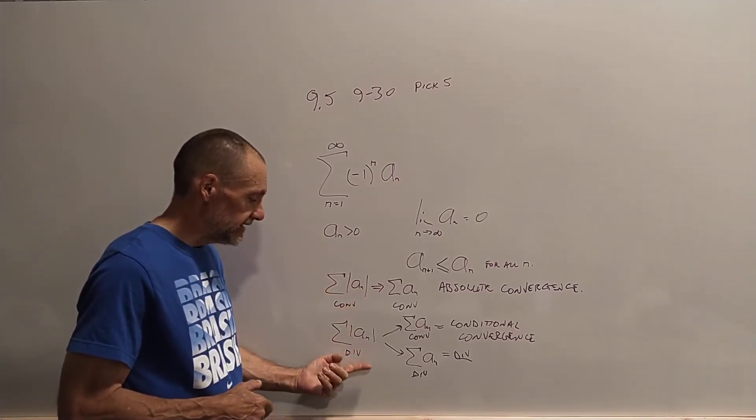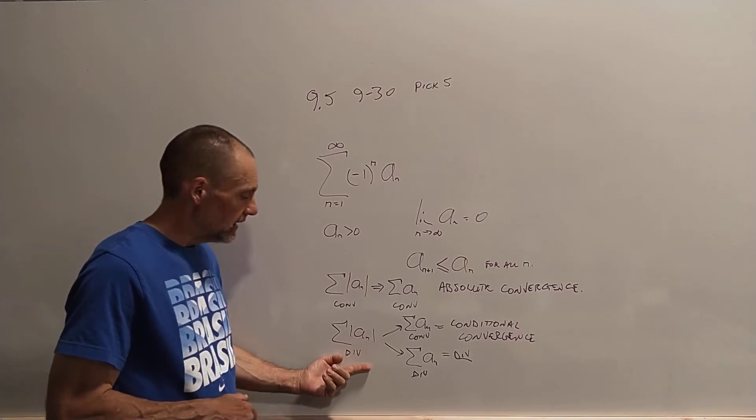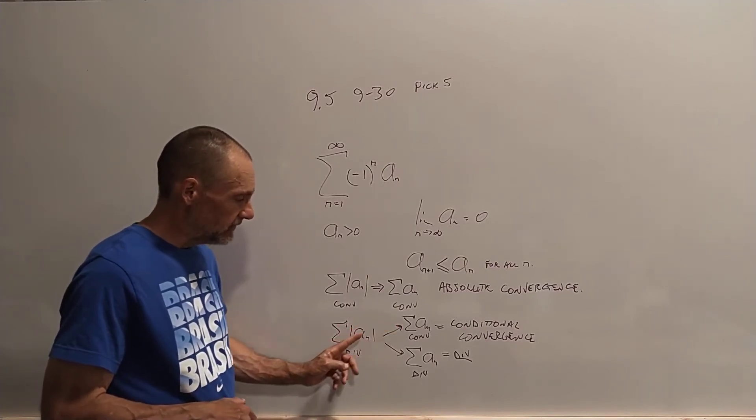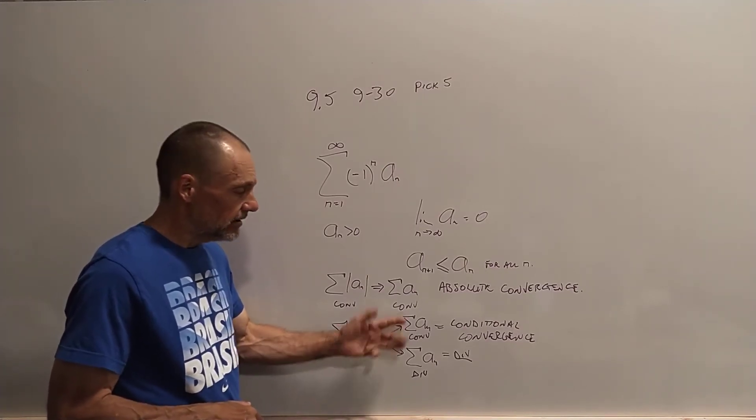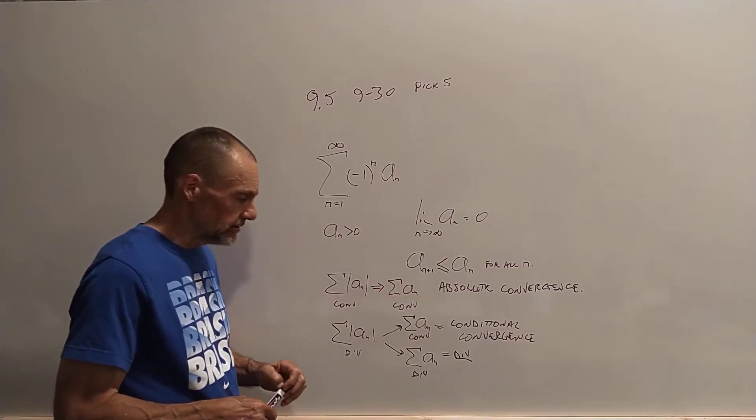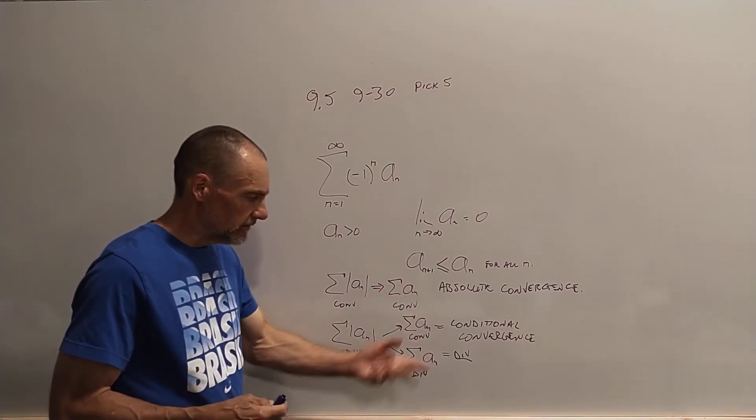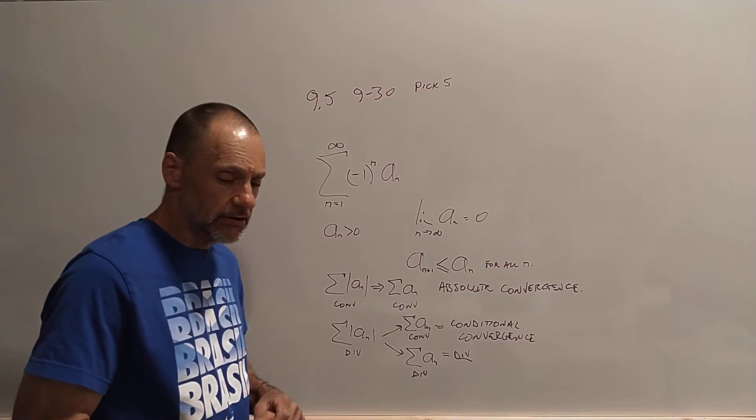Now, if this thing diverges, and without the absolute value, it converges, that's conditional convergence. Of course, if they both diverge, then it's just a divergent series.